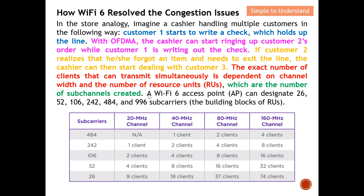A Wi-Fi access point can designate 26, 52, 106, 242, 484, and 966 sub-carriers, as illustrated on this table. These are the number of sub-carriers for each channel configuration. You can configure Wi-Fi 6 to have a 20 MHz channel, a 40 MHz channel, an 80 MHz channel, or a 160 MHz channel. On the next video I will explain a little bit more on this channel configuration. But in this video I'm going to explain why we need to move from Wi-Fi 5 to Wi-Fi 6 to resolve the congestion issue.